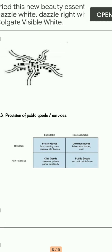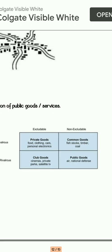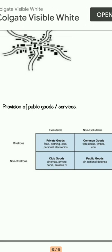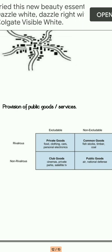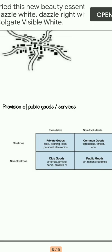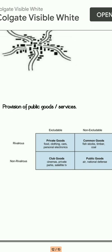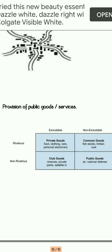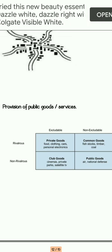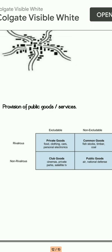Next is provision of goods and public goods services. This diagram is not available in your textbook. One diagram I selected shows rivalrous and non-rivalrous, with a table of private goods, club goods, public goods, and common goods. According to me, such questions may not be asked because there are more important topics that can be asked in the diagram section. If such questions do come, apply some logic and add related content — even half the marks will be awarded if you attempt something relevant.